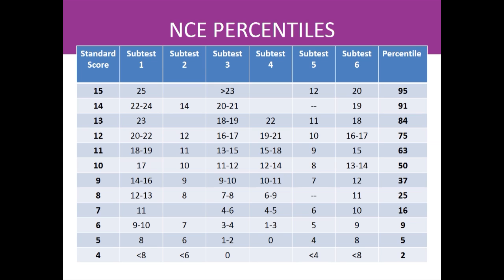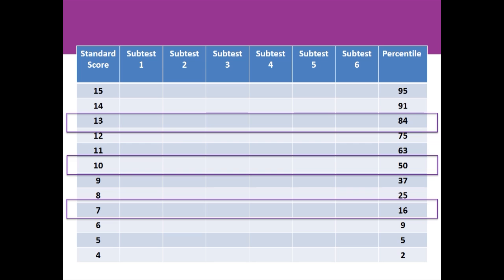If a test doesn't specify that it's providing NCE percentiles, you can usually tell by looking at the relationship between the standard scores and the percentile scores in the test manual. This fictional example is laid out like many normative test tables. Particular raw scores correspond to particular standard scores, scaled as subtest scores with a mean of 10 and a standard deviation of 3. There is a fixed relationship between the standard scores and the percentiles, regardless of where the raw score distributions are for the individual subtests. For an NCE percentile, a mean of 10 will always correspond to the 50th percentile. A score of 7, which is one standard deviation below the mean, will always correspond to the 16th percentile. A score of 13, which is one standard deviation above the mean, will always correspond to the 84th percentile.